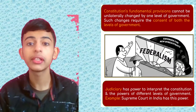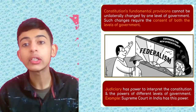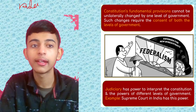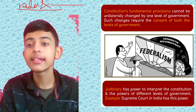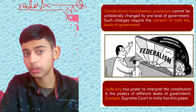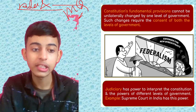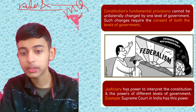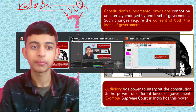The constitution's fundamental provisions cannot be unilaterally changed by one level of government — such changes require the consent of both levels. This is a very important MCQ point, so please mark it. Additionally, the judiciary has the power to interpret the constitution and the powers of different levels of government, ensuring that everything is being followed. For example, the Supreme Court in India holds this power.